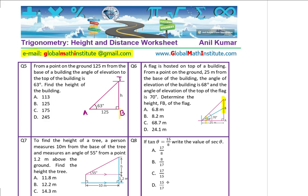Question number 7 now. To find the height of a tree, a person measures 10 meters from the base of the tree and measures an angle of 55 degrees from a point 1.2 meters above the ground. Find the height of the tree. So, most of the time the diagrams are not given to you, but here we have sketched one for you. Try to read the question and see how you should have sketched this diagram.